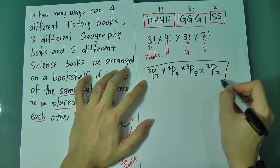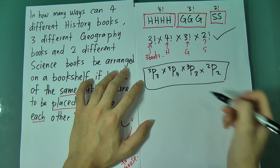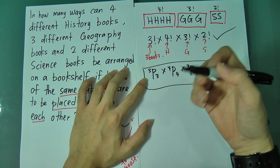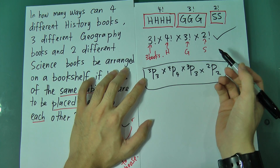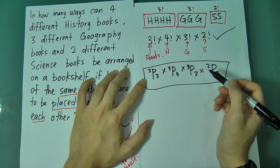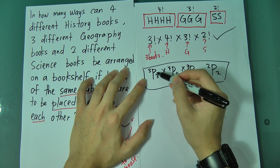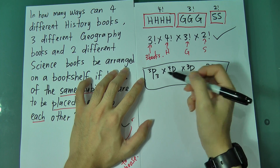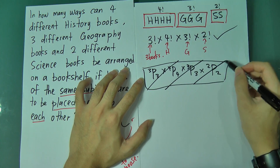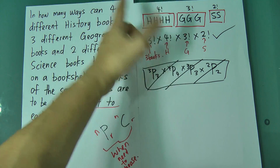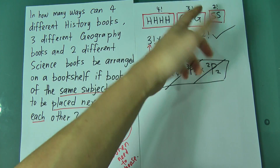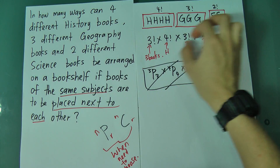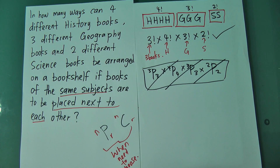Of course, some reference books explain this using 3P3 × 4P4 × 3P3 × 2P2 — it's the same thing. But I prefer the factorial method because it's easier for students to understand. They are using permutation; 3P3 gives the same number as 3 factorial. You have 4 books — just use 4 factorial. 3 books — 3 factorial. 2 books — 2 factorial. You have 3 subject groups to arrange, so that's 3 factorial.